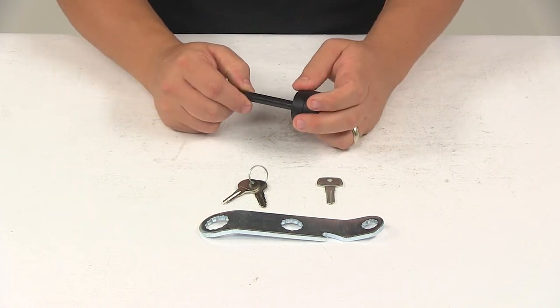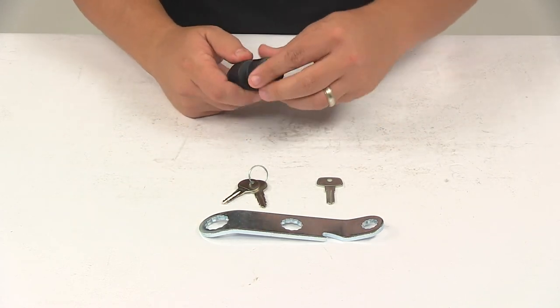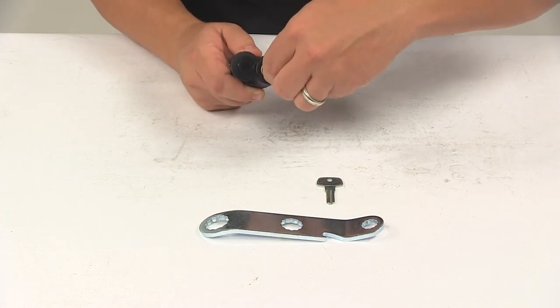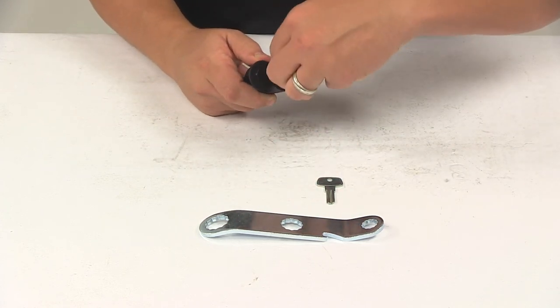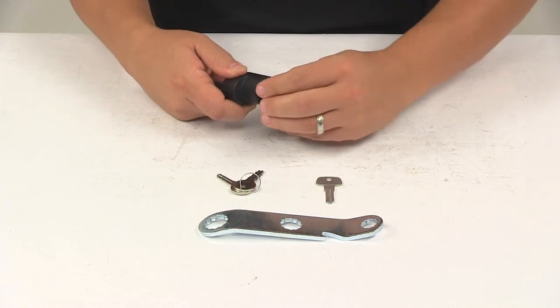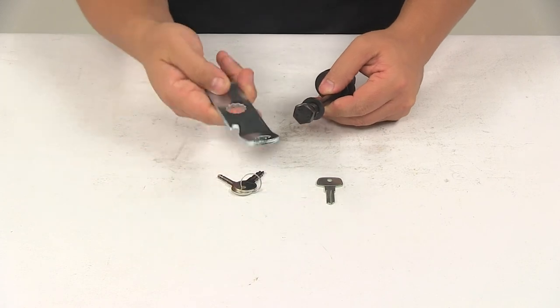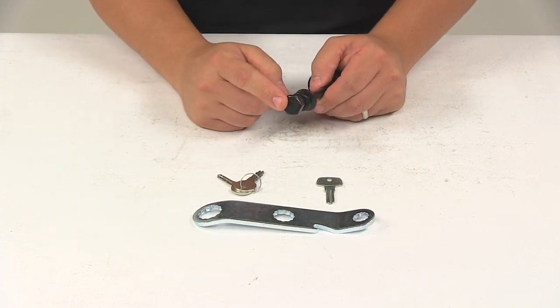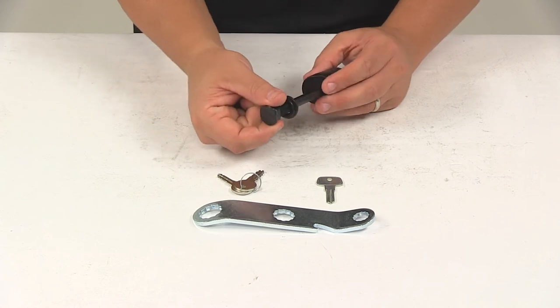This snaps on the other side, then you move it to a locked position. It comes with two keys and an included tool to tighten it down inside the hitch. You can also use a three quarter inch wrench or socket.